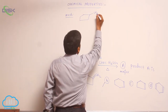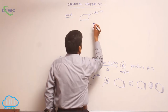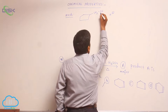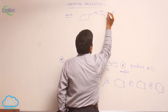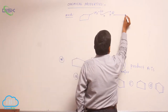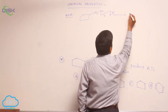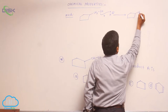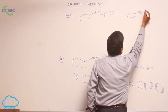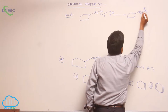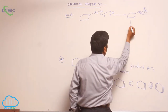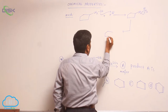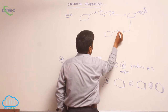We have CH2OH. H+ is added. A lone pair of electrons attacks on H+. It converts into CH2. Here a water molecule is lost, then loss of H+ takes place. It converts into a 1° carbocation, which is unstable.